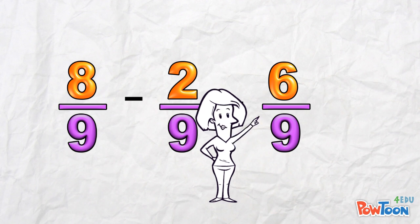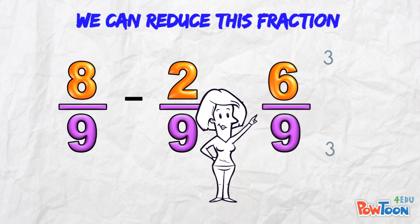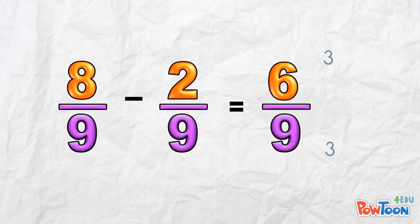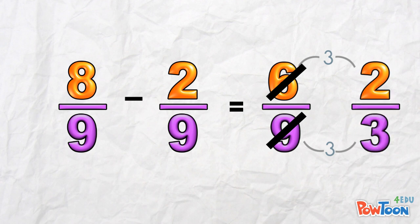6 and 9 are both in the 3 times table. So we can reduce this fraction. 6 over 9 reduces to 2 over 3. 2 thirds.